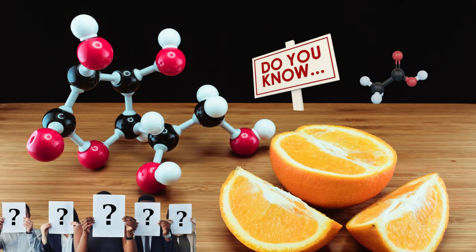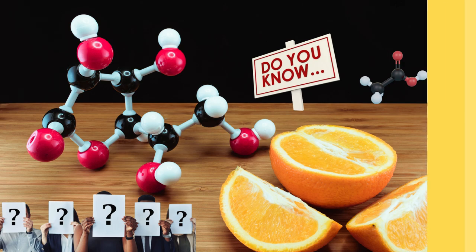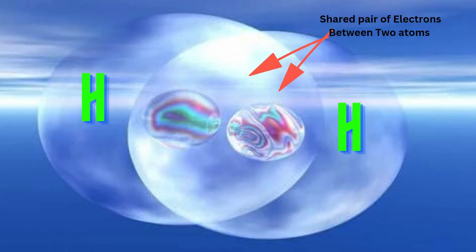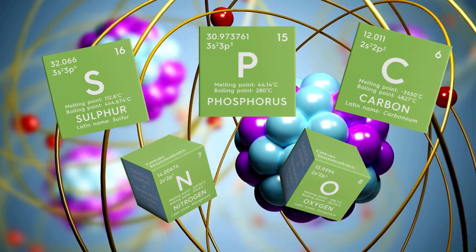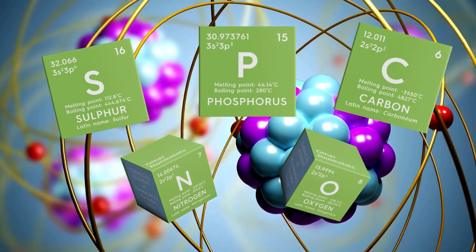Do you know what exactly is a covalent bond? In simple terms, a covalent bond is formed when two atoms share a pair of electrons. This type of bonding typically occurs between non-metals where both atoms need more electrons to complete their outer shells.